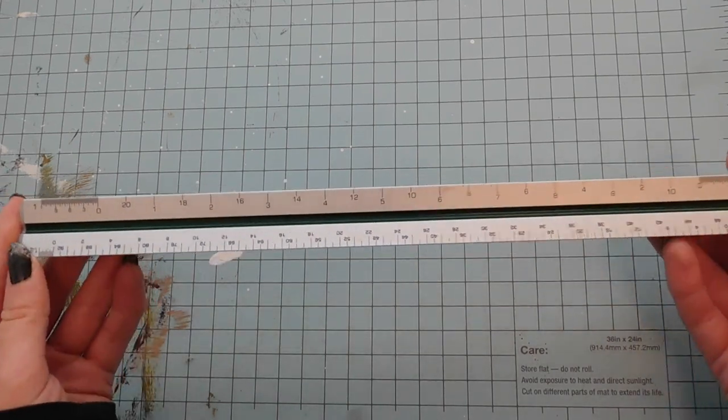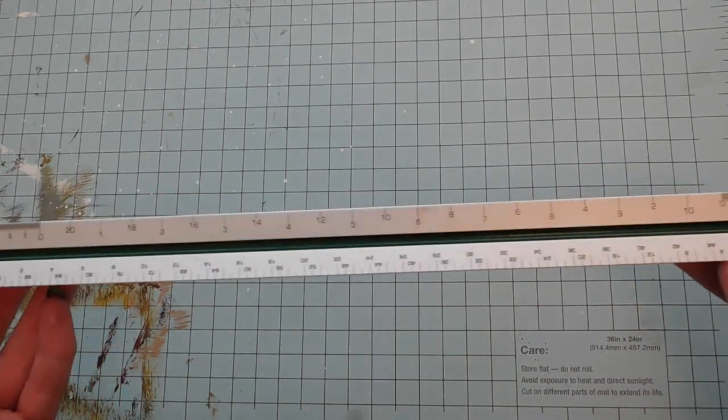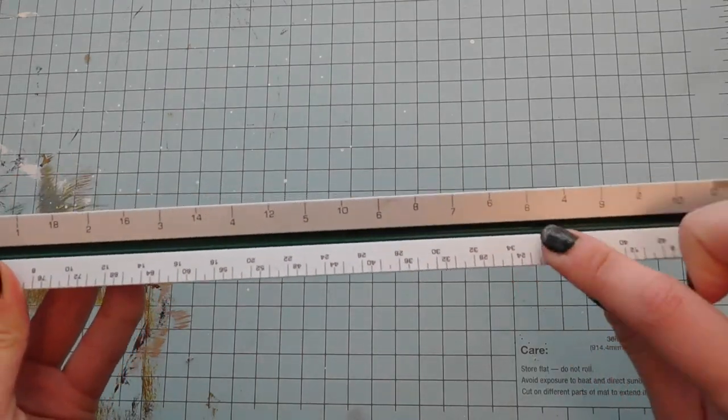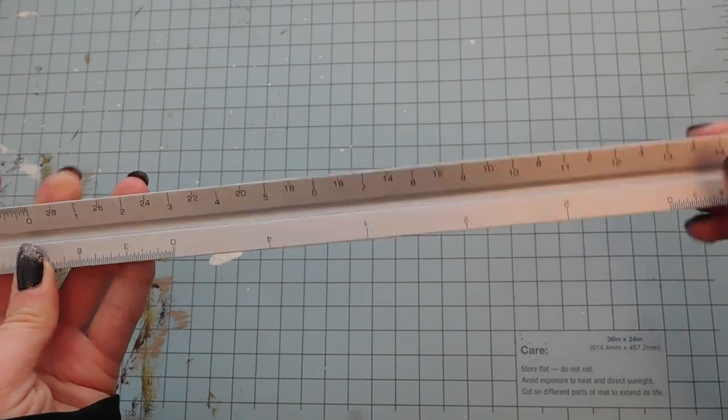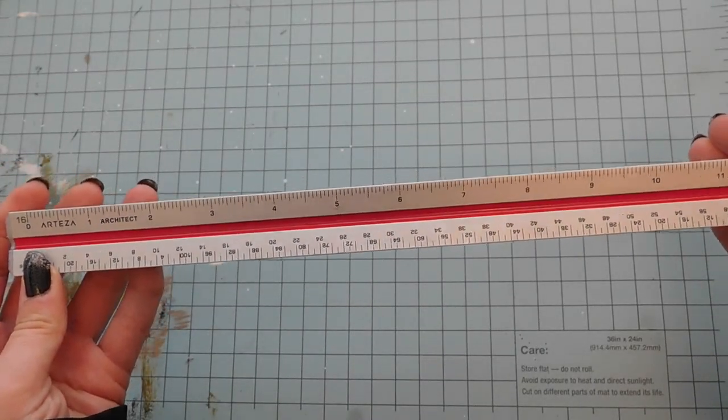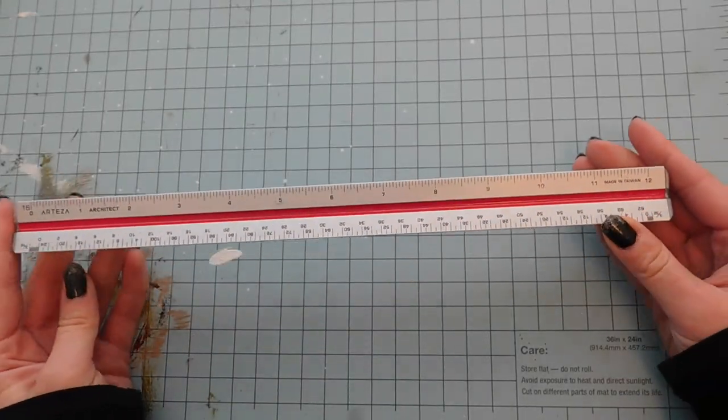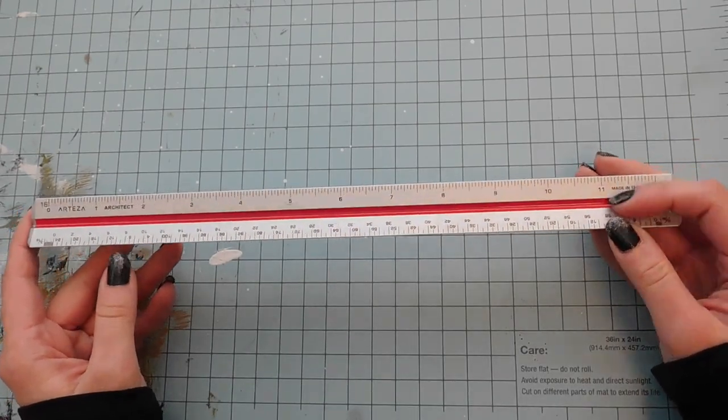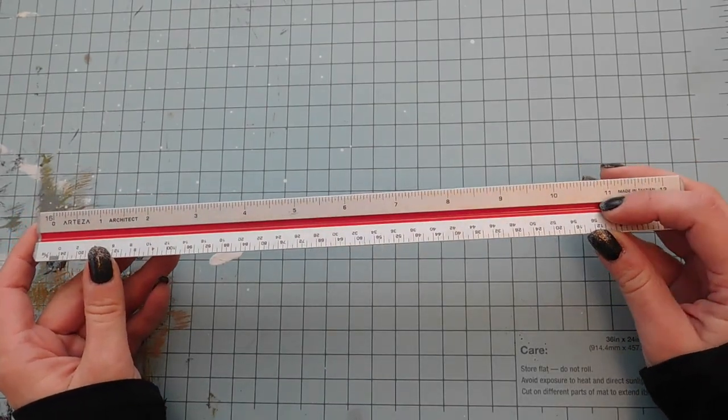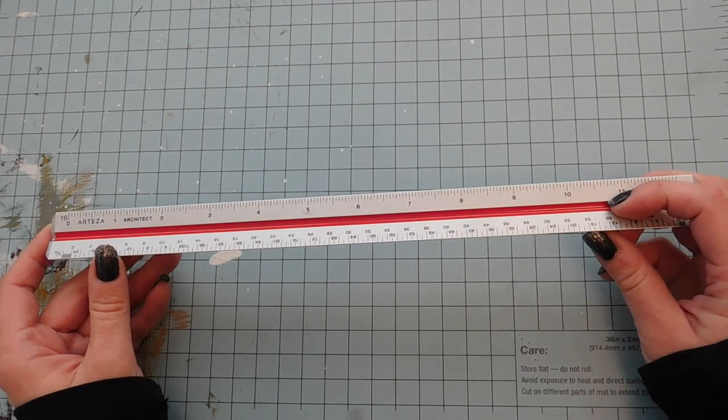So going through the scale ruler real quick, you can see that mine is color coded. So I have this green strip here, this one is blank, and this one is red. And quite a few scale rulers are going to have this type of color coding, and that just helps you quickly navigate to the side that you want to use.